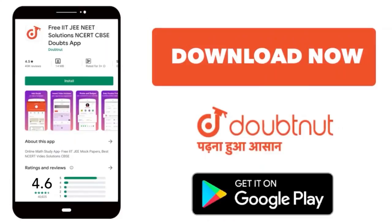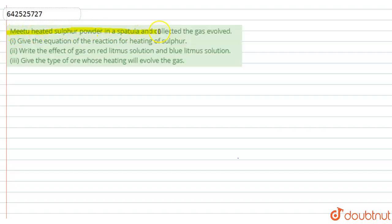Hi, in this question it is given that Meetu heated sulfur powder in a spatula and then collected the gas evolved.